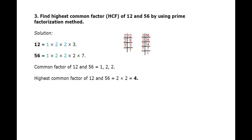The third example: find the highest common factor of 12 and 56 by using the prime factorization method. The first number is 12. We divide it by prime numbers till the last number is exactly divisible by the last prime number. We get the factors 1 × 2 × 2 × 3.